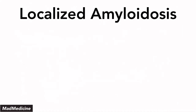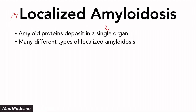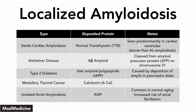Now we'll discuss localized amyloidosis, where amyloid deposition occurs in a single organ, leading to localized symptoms. There are many different types of localized amyloidosis. It is highly recommended to memorize this chart. The ones most important to know are senile cardiac amyloidosis, Alzheimer's disease, and type 2 diabetes, because these are easily forgotten but very high yield given how commonly they occur.